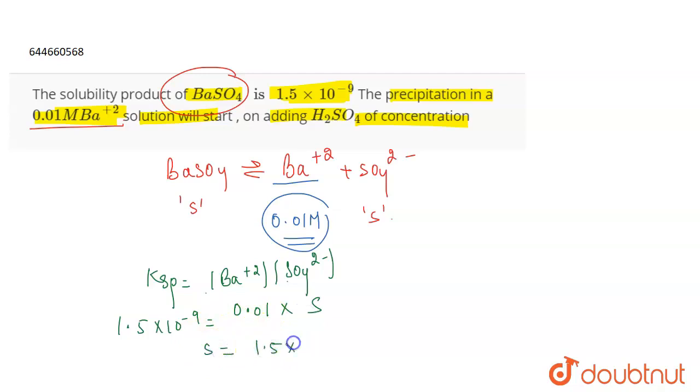So S will be equal to 1.5 into 10 to the power minus 9 divided by 0.01, which will become 1.5 into 10 to the power minus 7 molar. This will be the solubility of SO4 2 negative.